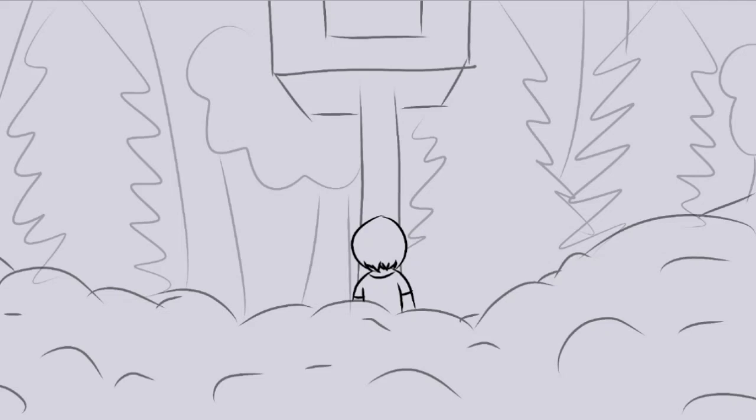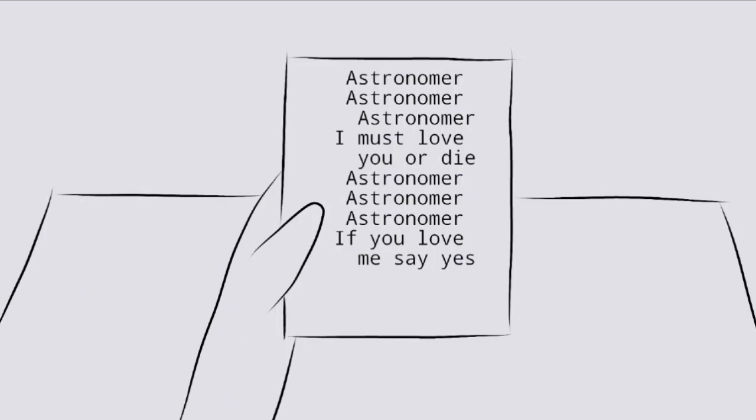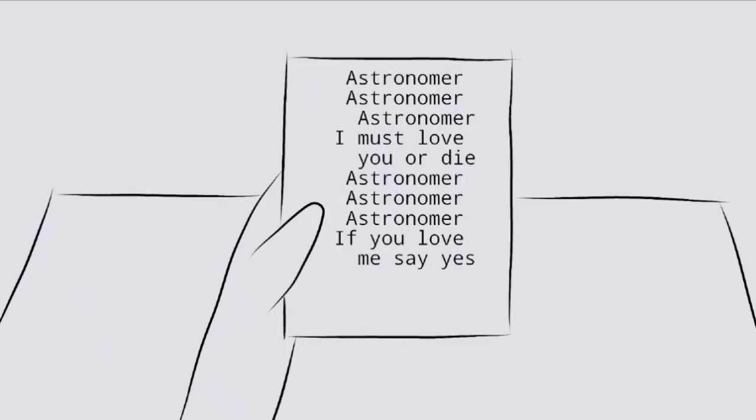Rose went to his treehouse and looked at the stars through his telescope. She wanted to hold his hand. So she wrought him a poem, signed it and sealed it in a rice paper envelope with a lily for a stem.